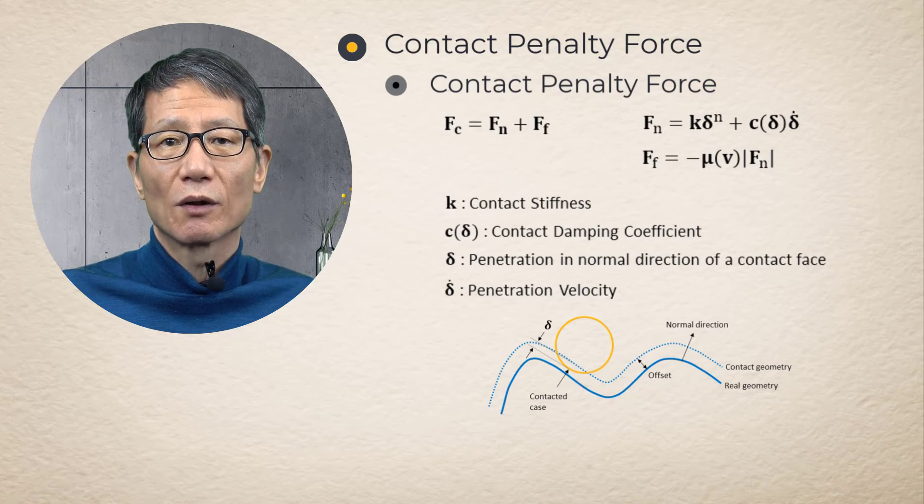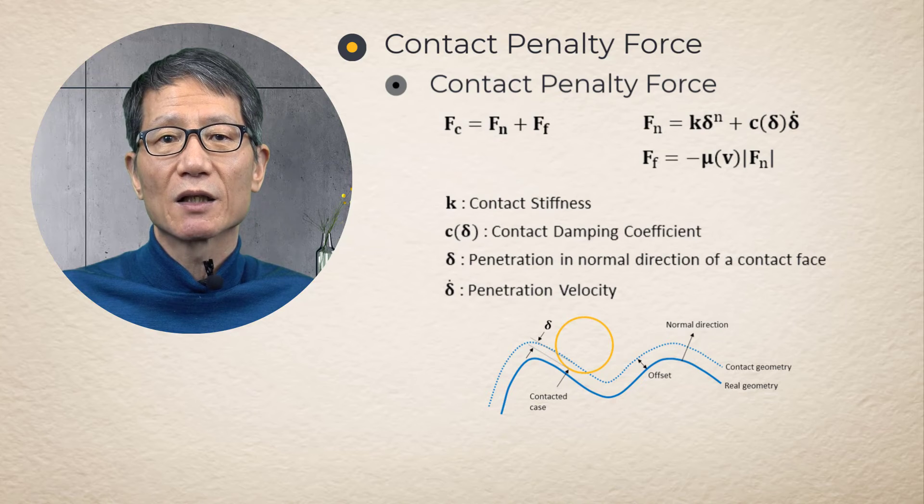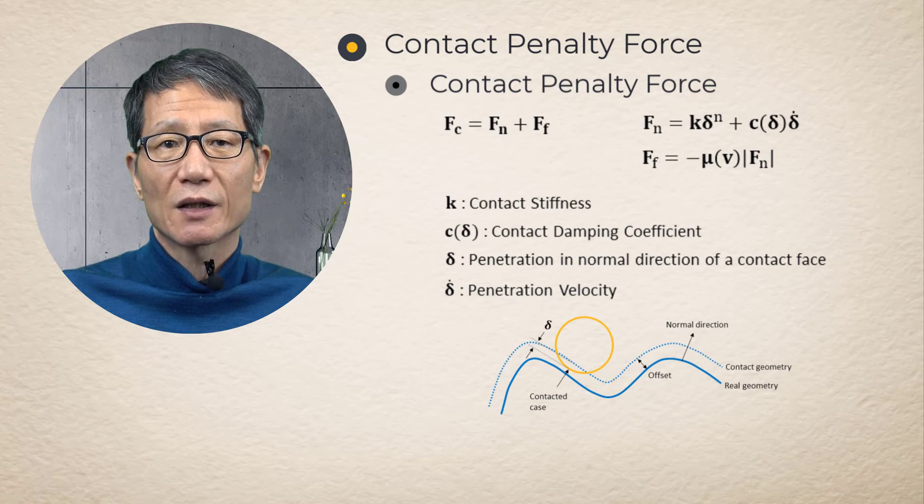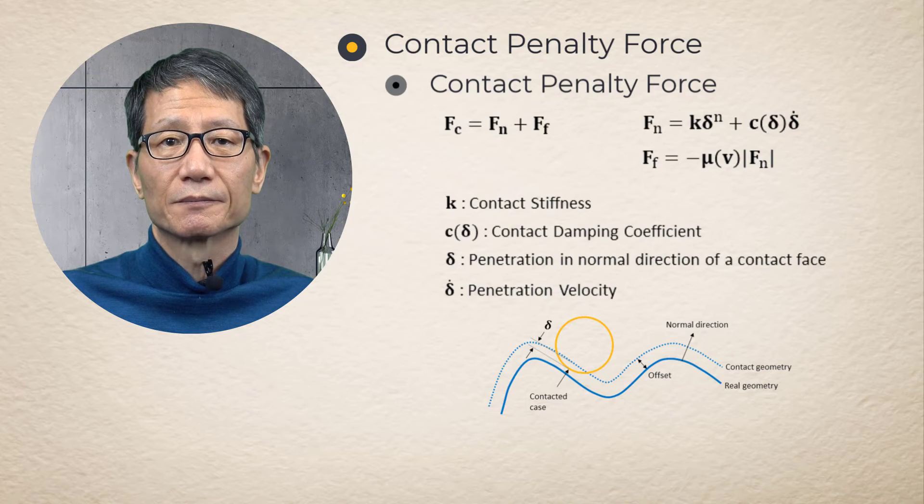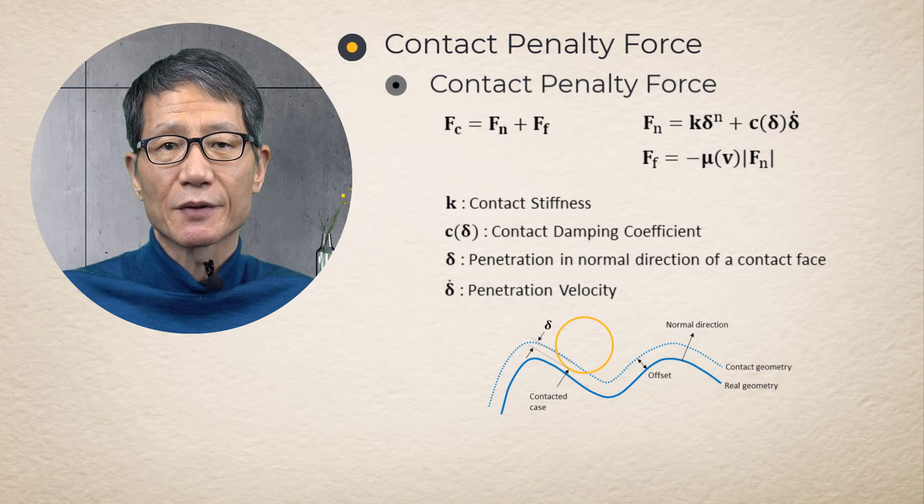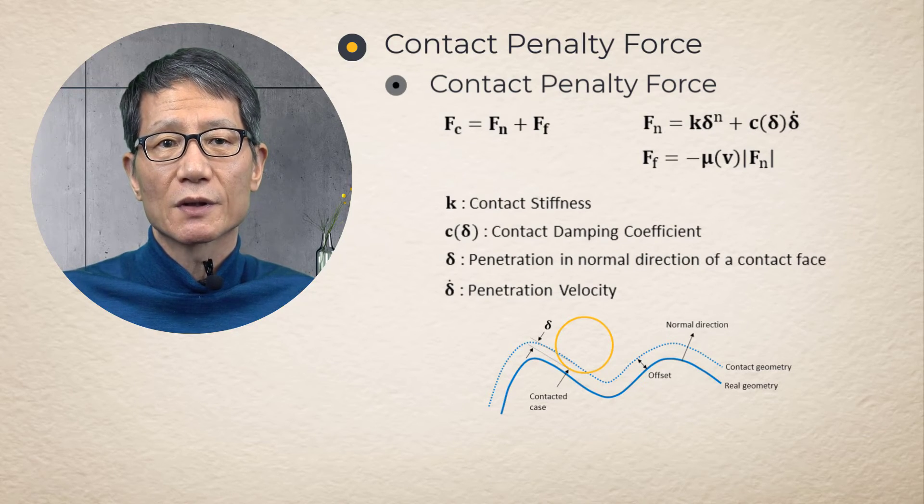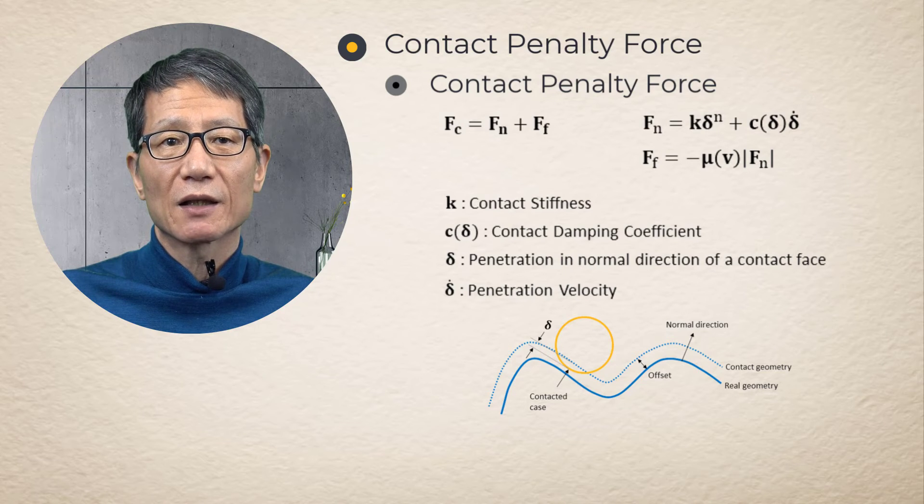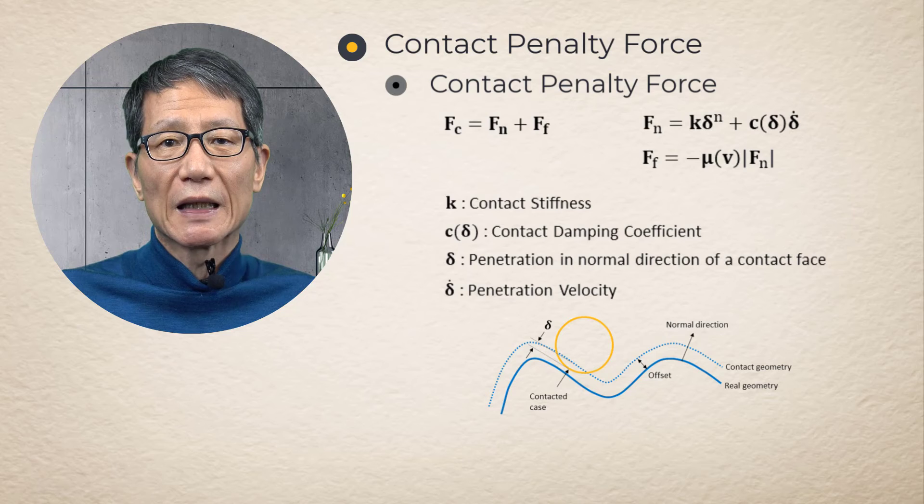An exponent of the penetration depth is used to replicate the increase of the stiffness as the contact area and the penetration depth increases. Damping coefficient is made a function of the penetration depth to prevent a sudden damping force at the entry and exit of a contact. The damping coefficient increases as the penetration depth increases.